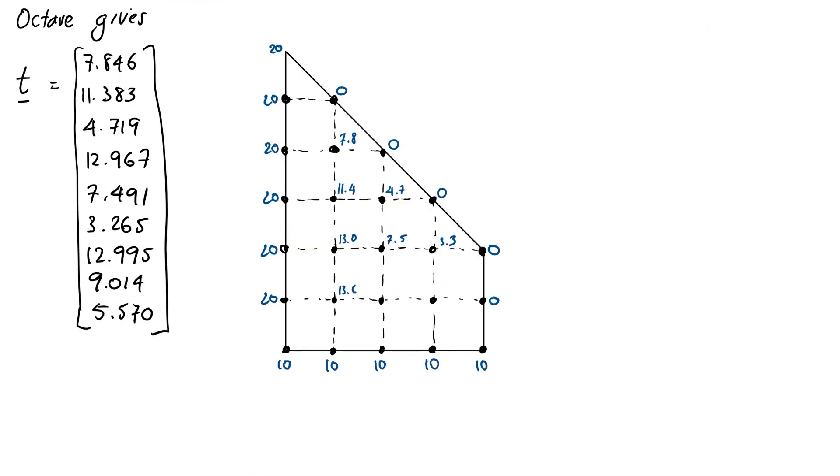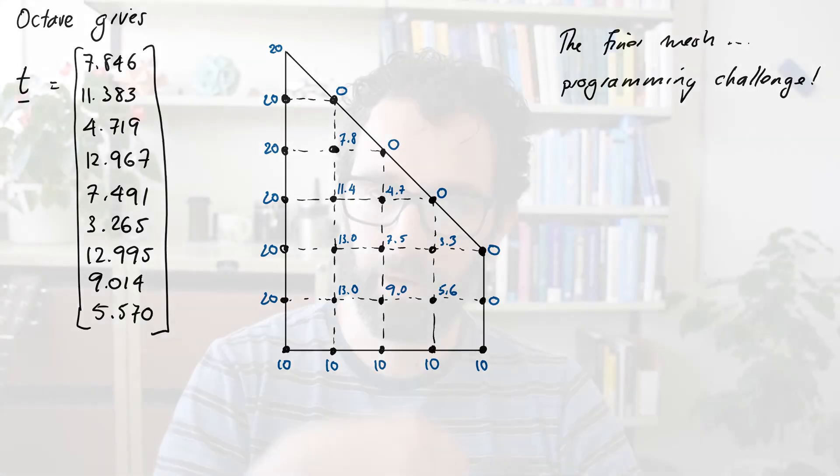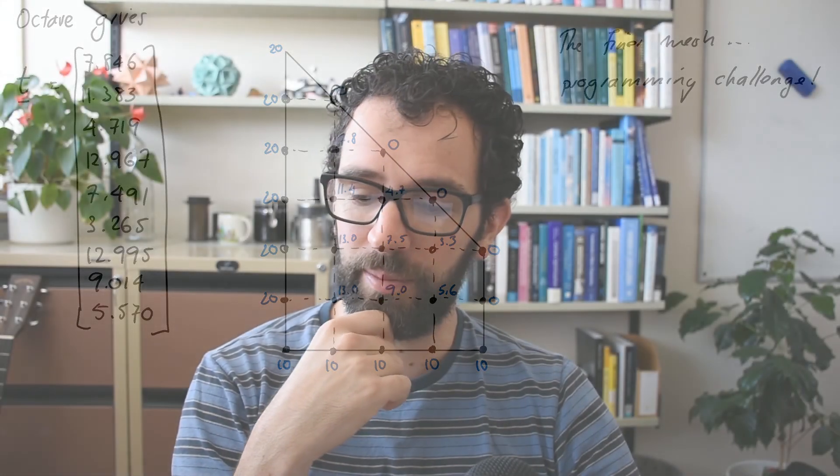And look, it seems to make some degree of sense. If we just look at the boundaries and the interior values, those numbers seem to kind of fit with what we might expect to see here. Okay, now we could go ahead and repeat this for our finer mesh. But to attack this, we would probably want to invent some kind of way of building the matrix automatically. Because we're already sort of nearing the limit of what we can reliably manually type in. So I won't do this in this video, but those of you with some computer programming experience, maybe you want to go ahead and try this out as a programming challenge.